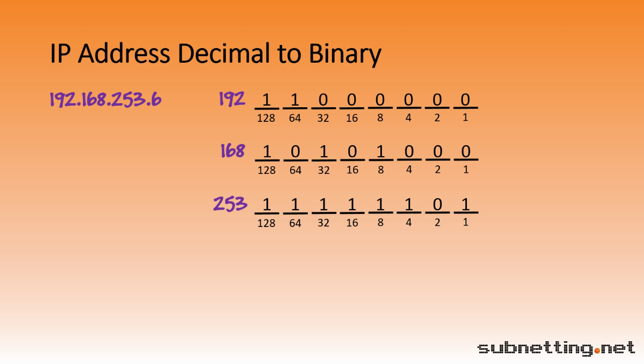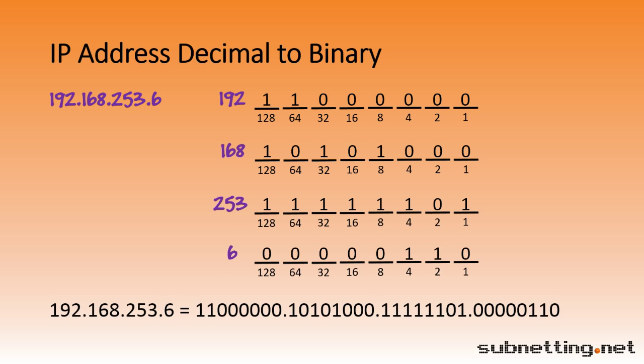Now let's do the last number, 6. We know we don't need 128, 64, 32, 16, or 8, because they're all too high. So we start with 4, and then 4 plus 2 is 6. That's our number, so we don't need the last bit of 1. Now we can put the numbers together to write out the entire IP address in binary. These numbers look quite different, but they represent the same IP address, just written in two different ways.